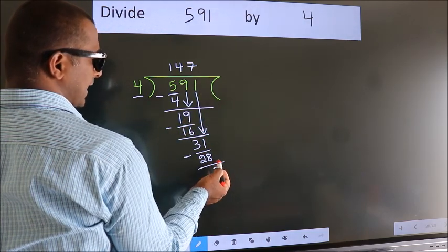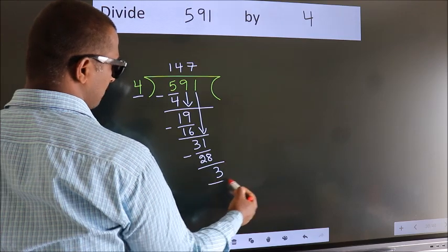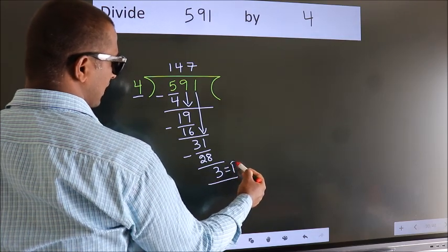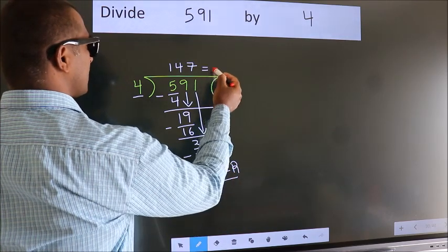No more numbers to bring down. So we stop here. This is our remainder. This is our quotient.